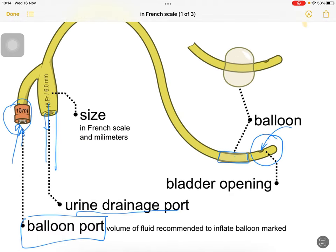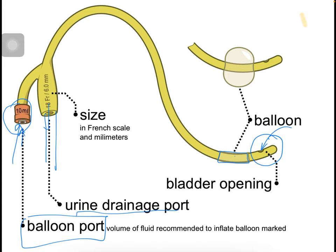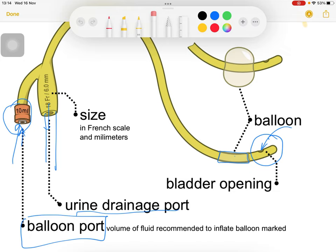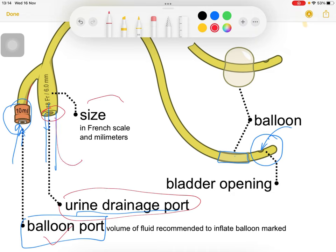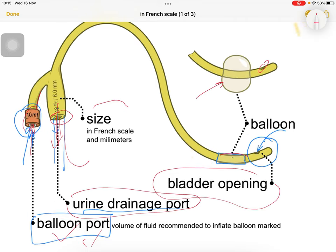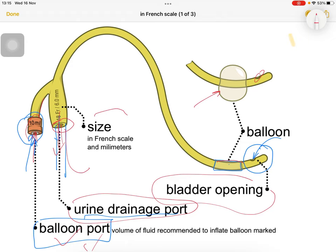The Foley catheter has two main ports: the balloon port and the urine drainage port, where the urine bag will be attached. There is a balloon which will inflate when we insert anything from the balloon port tube. Here is the bladder opening — urine will come through this part and get collected in the urine bag which is connected from this port.